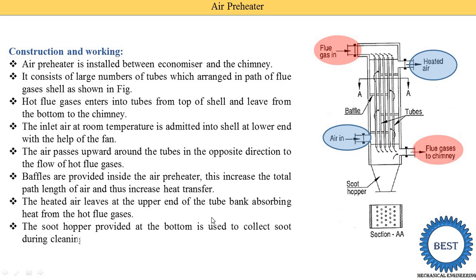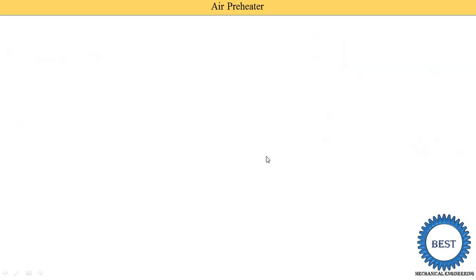Soot hoppers are provided at the bottom and are used to collect soot during the cleaning operation of the tubes. A cross-section view at section A shows the arrangement of the multiple tubes used in the air preheater.